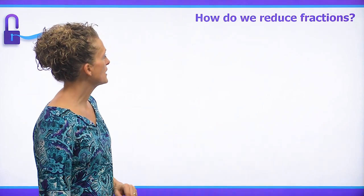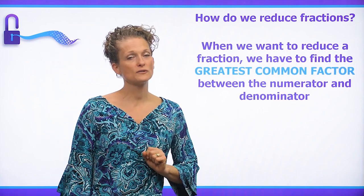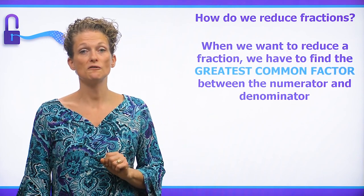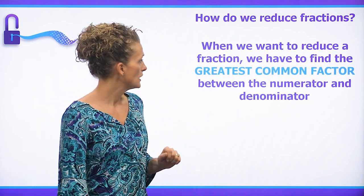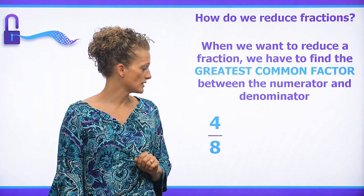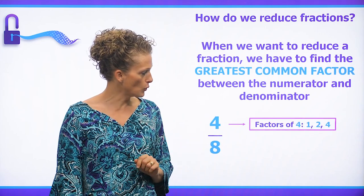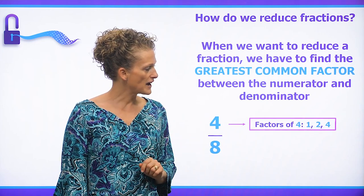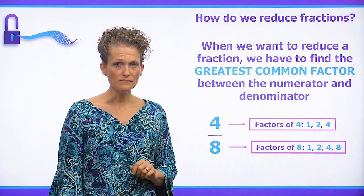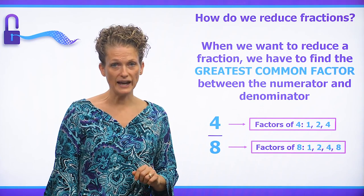So how do we reduce the fraction? When we want to reduce a fraction, we have to find the greatest common factor between the numerator and the denominator. So if we look at four, the factors are one, two, and four. The factors of eight are one, two, four, and eight.